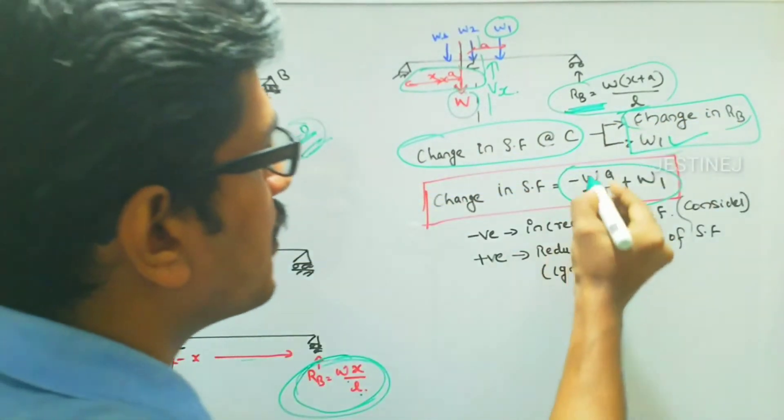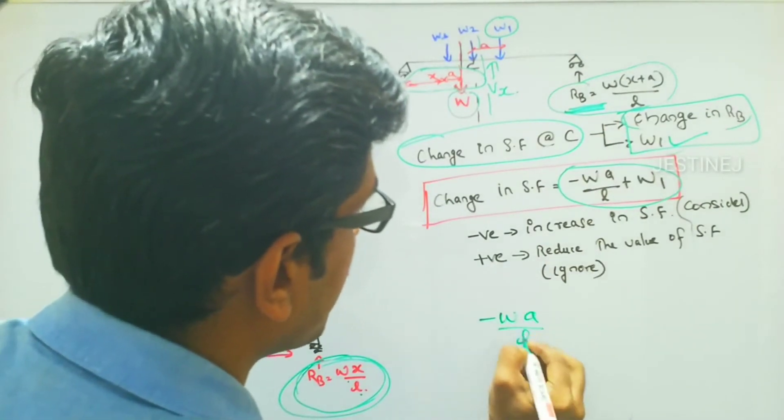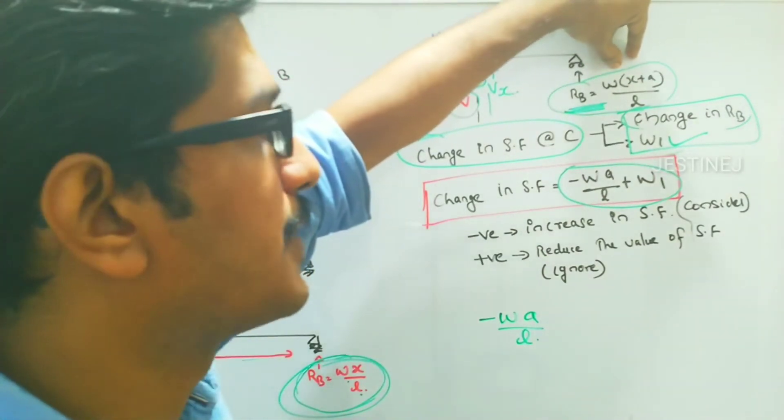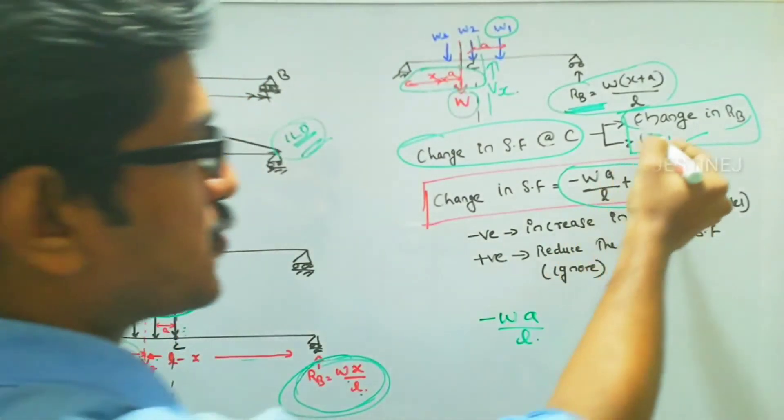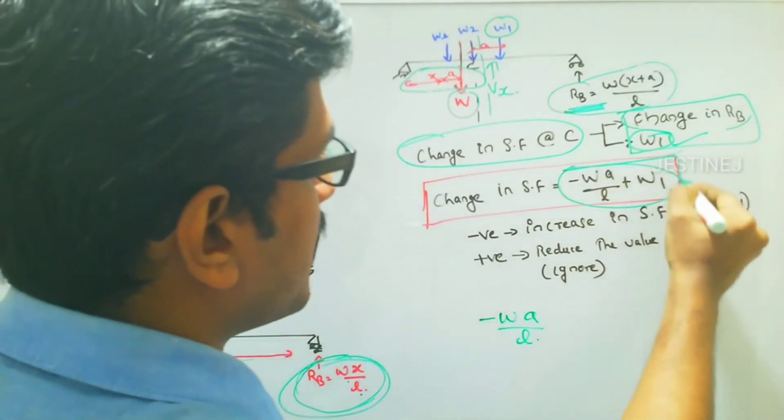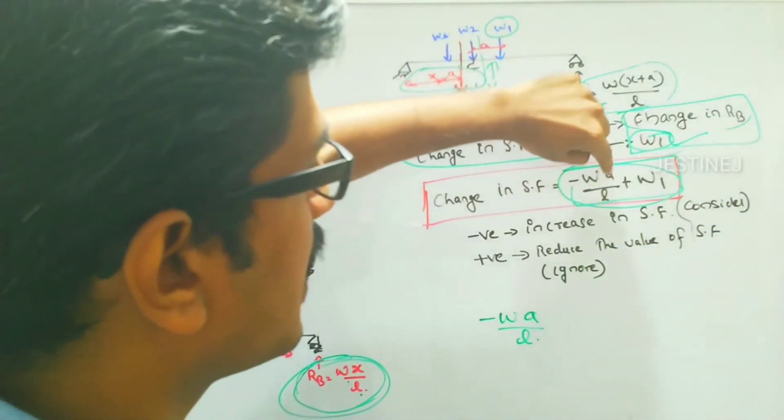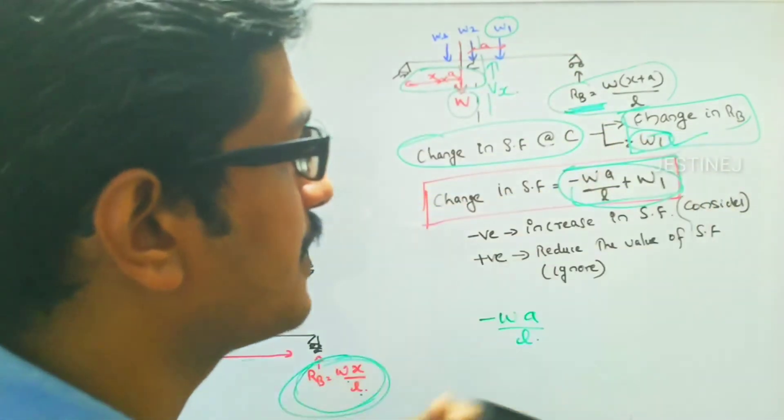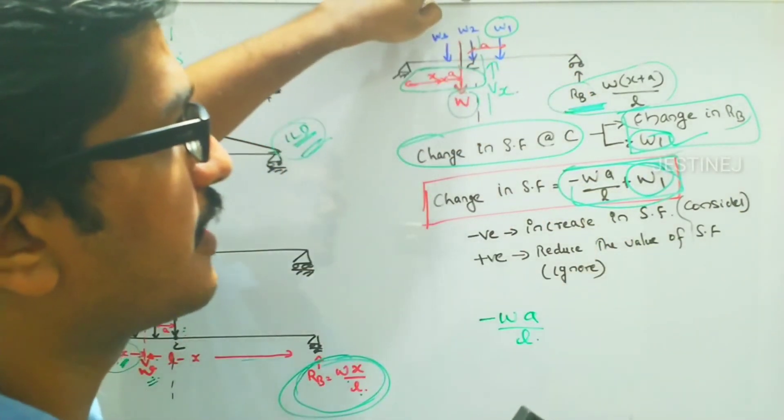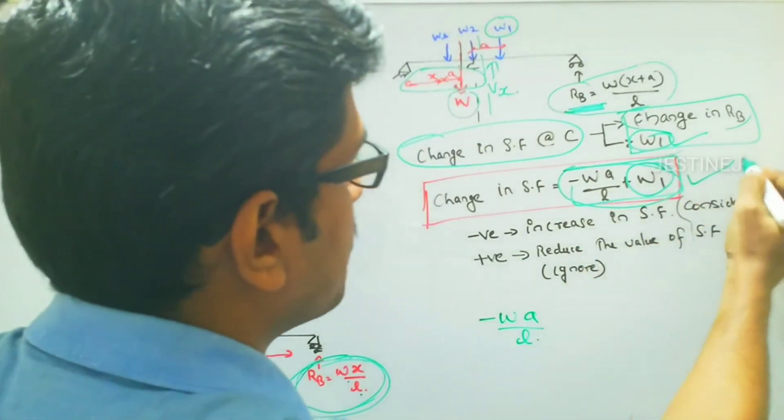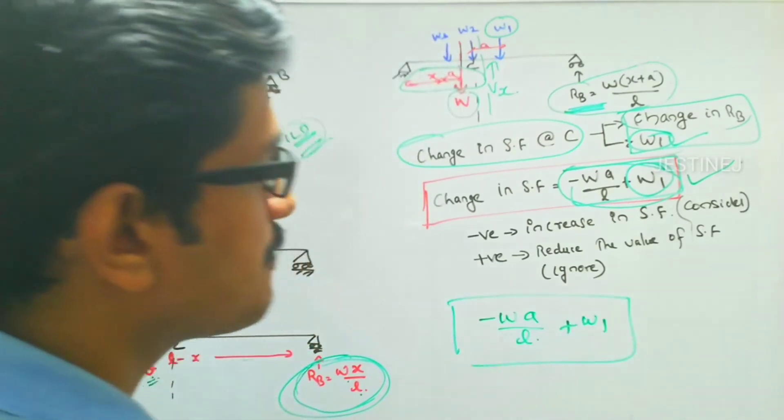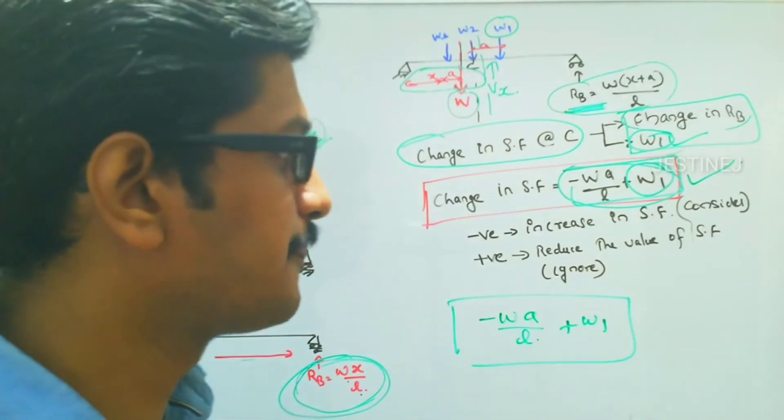Here the value of Rb is W multiplied by x plus a by L, but the original value is Wx by L. So if you take the change in reaction at B, the value is going to be minus W a by L. And also it depends upon W1, so according to the sign convention, we will follow this: minus W a by L, the change in reaction at B, and here W1 is positive since we are using this sign convention. So this is the condition for finding out which load will give the maximum shear force.